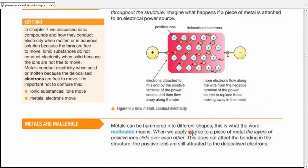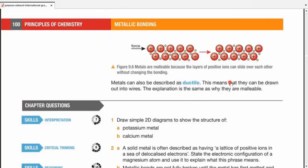Metals are malleable. Metals can be hammered into different shapes. This is what the word malleable means. If we apply a force on the piece of metal, layers of positive ions slide over one another. This does not affect the bonding in the structure. The positive ions are still attracted to the delocalized electrons. It's just that they slip over one another, forming layers. Hence, they are malleable.